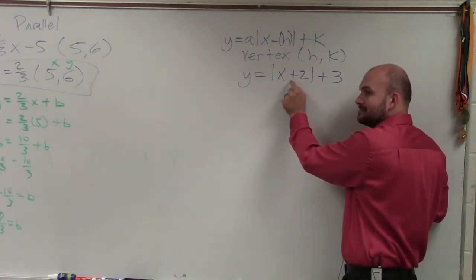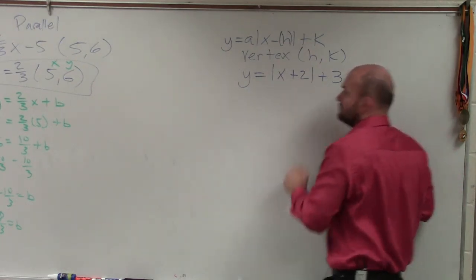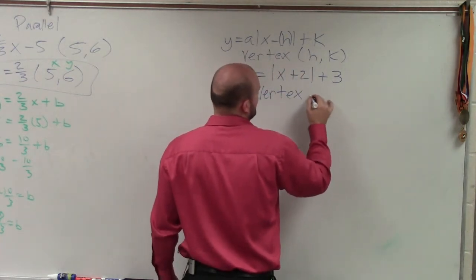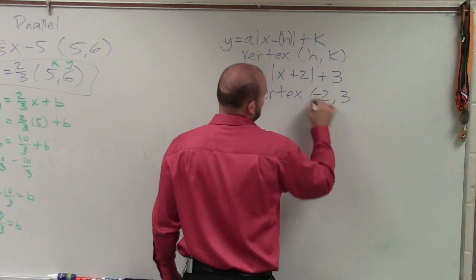But notice here, this is x plus 2. So my vertex is going to be the opposite, which is negative 2, positive 3.